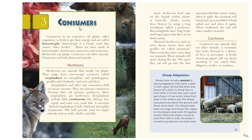For the next level of organisms in a food chain or food web, we have the consumers. Consumers in an ecosystem eat plants, other organisms, or both to get their energy and are called heterotrophs — a Greek word meaning other feeders. There are three kinds of heterotrophs: herbivores, carnivores, and omnivores. Herbivores eat plants, carnivores eat other animals, and omnivores, such as us humans, eat both plants and animals.